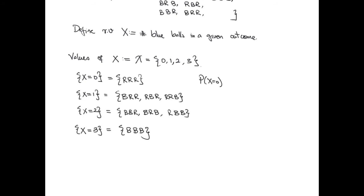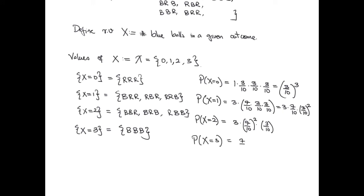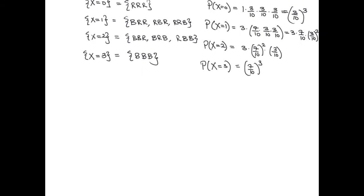The probabilities for each of these outcomes can be calculated as follows. We can summarize all of these probabilities into what is known as the distribution table.